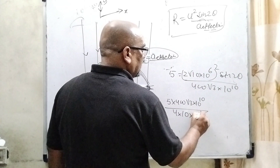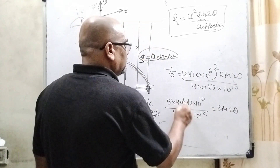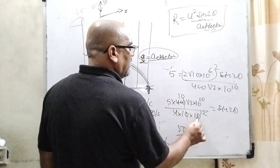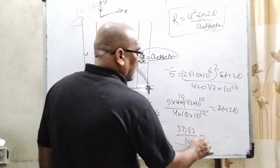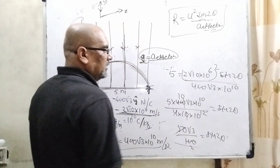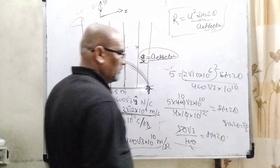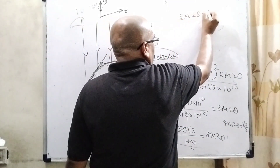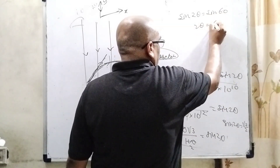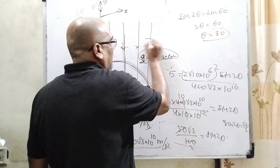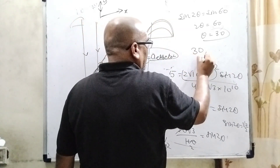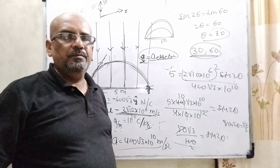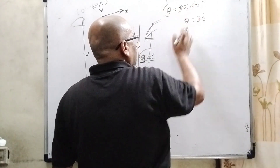Simplifying: 5 × 400√3 × 10¹⁰ = 2000√3 × 10¹⁰ in the denominator side, and the numerator side gives 40 × 10¹². After cancellation we get sin2θ = (5 × 400√3 × 10¹⁰) / (40 × 10¹²) = √3/2. So sin2θ = √3/2, which means 2θ = 60°, giving θ = 30°. Since complementary angles give the same range, the two projection angles are 30° and 60°.